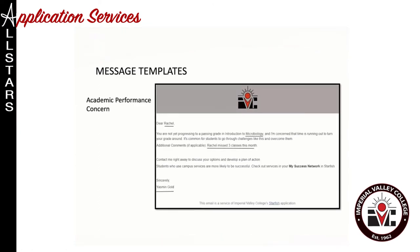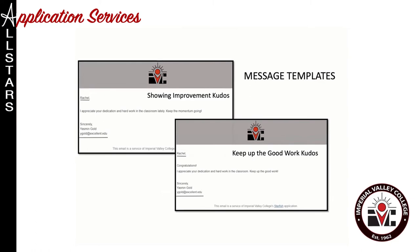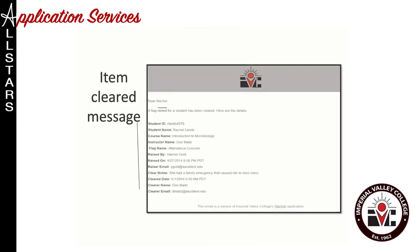Here's an example of a message template currently rolled out: the 'Academic Performance Concern' flag. It will automatically populate the student's first name, the name of their course, and any note the instructor added when they raised the flag — for example, 'Rachel missed three classes this month.' It then says 'contact me right away, sincerely' and whoever raised the flag is auto-populated. The verbiage is carefully crafted to normalize the situation and use positive language. Kudos examples include 'I appreciate your dedication and hard work — keep the momentum going.'